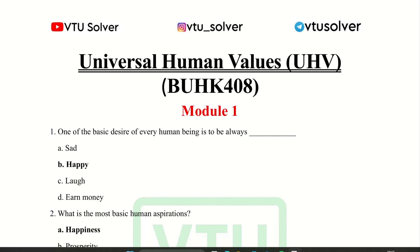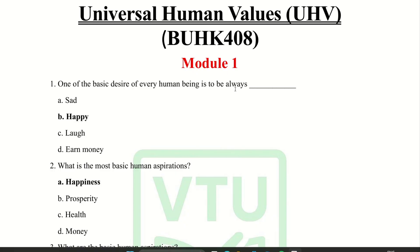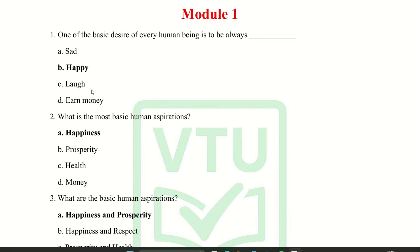Hello guys, welcome back to our YouTube channel YouTube Solver. Today we are discussing important questions of Universal Human Values, Module 1. The first question: one of the basic desires of every human being is to always be — the answer is happy. The second question: what is the most basic human aspiration? The answer is happiness.